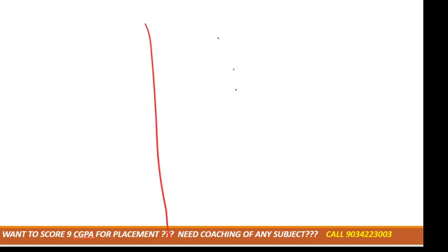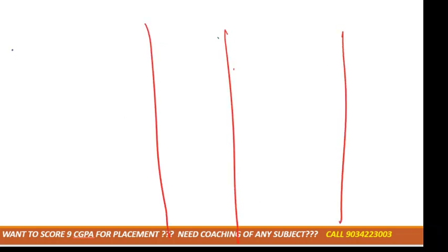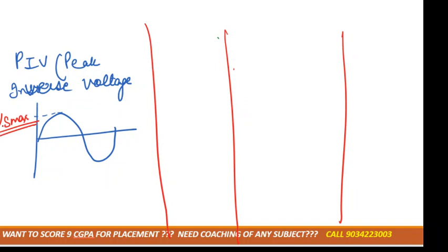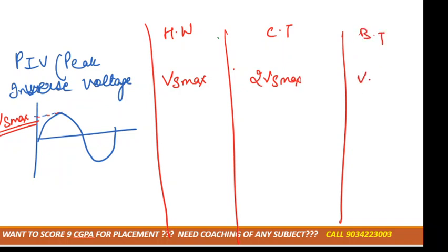Next is the peak inverse voltage, denoted by PIV. PIV is the maximum voltage across the diode — suppose we have a waveform, the maximum voltage it reaches is the peak inverse voltage, which is VS max. For half wave rectifier, PIV is VS maximum. For center tapped, the formula is 2 VS maximum. For bridge type rectifier, it is VS maximum.